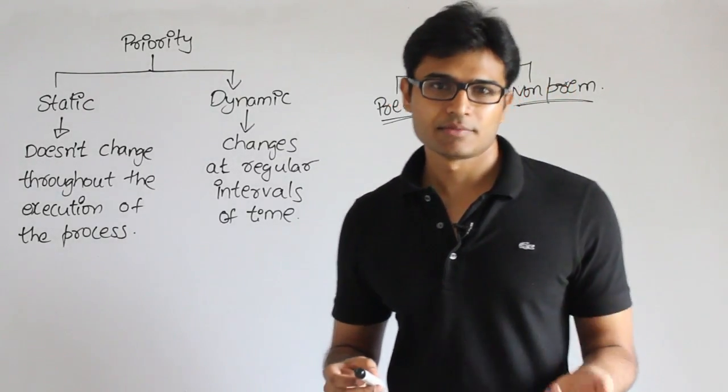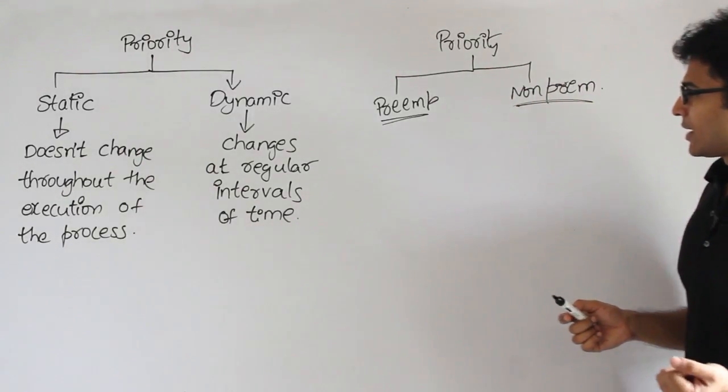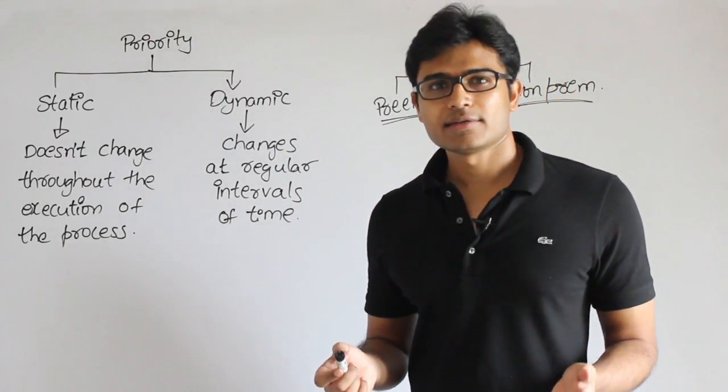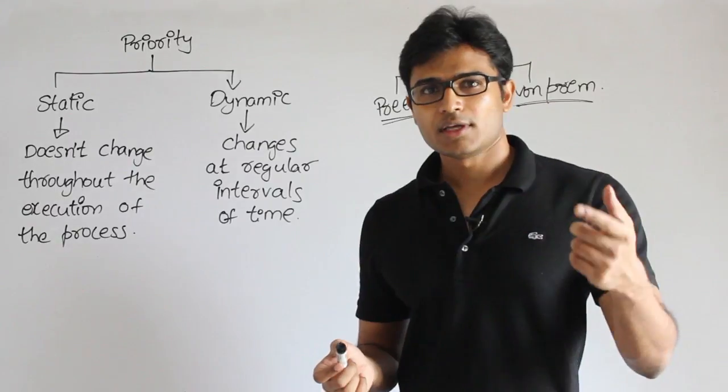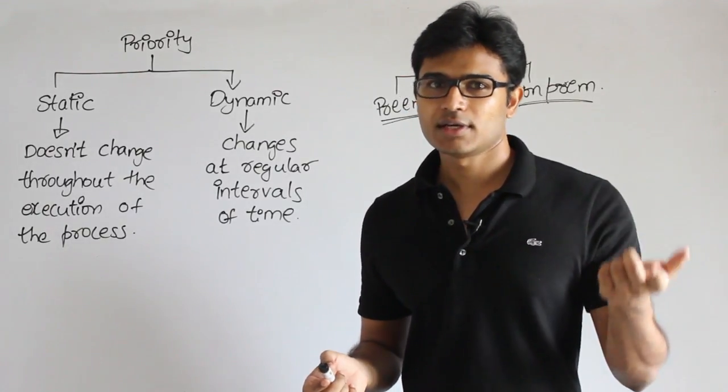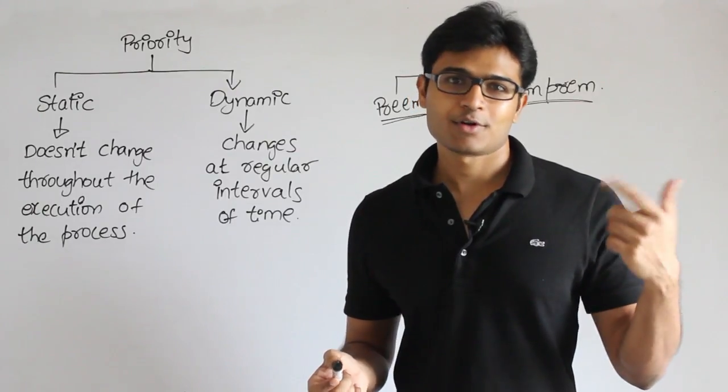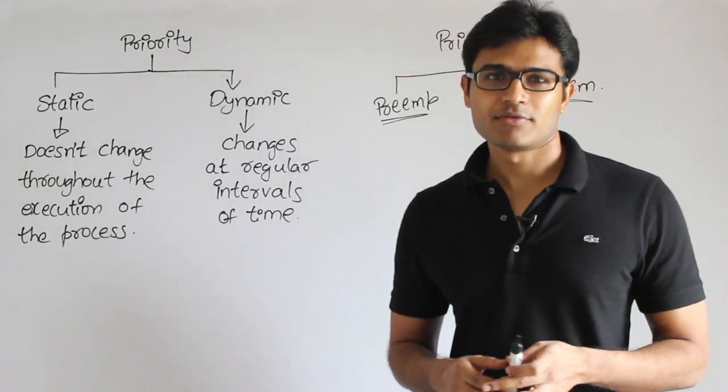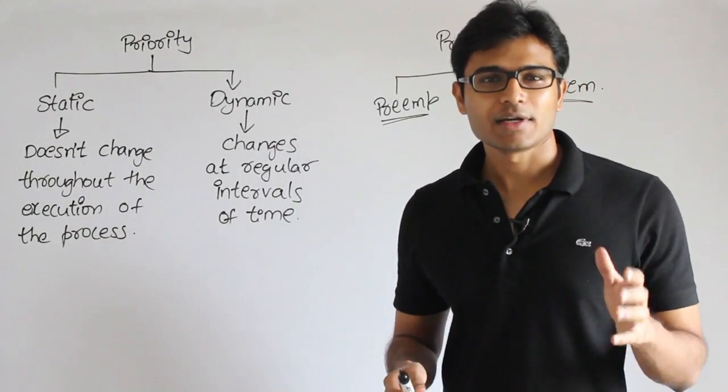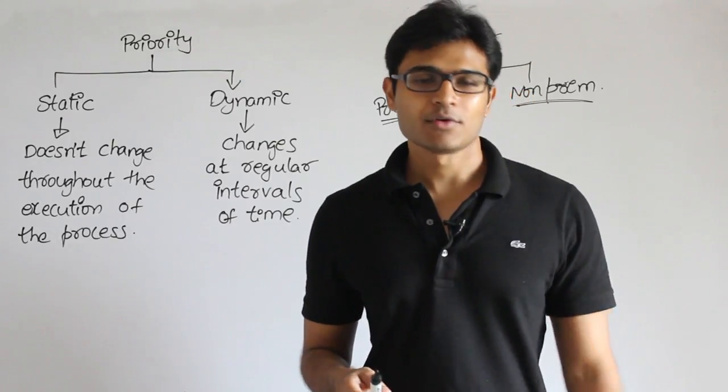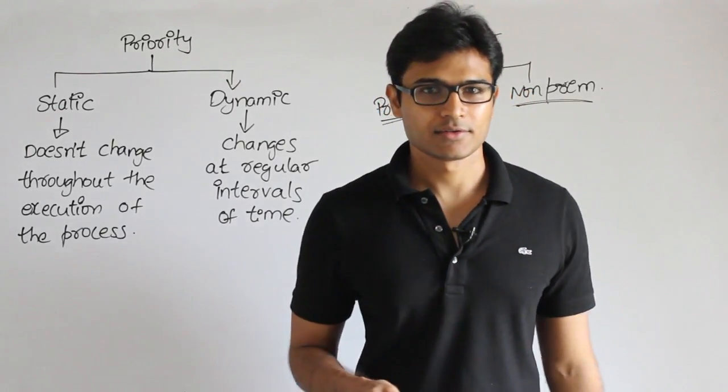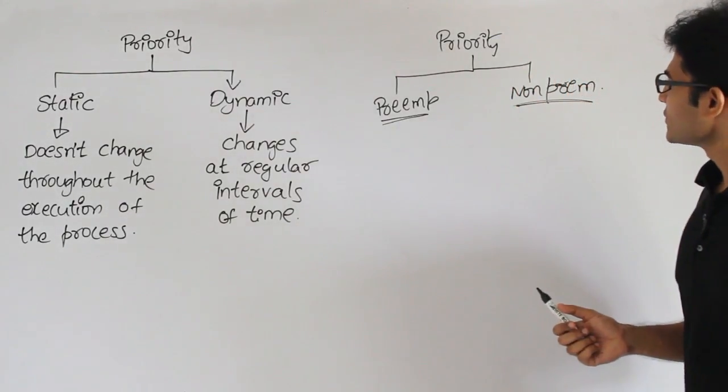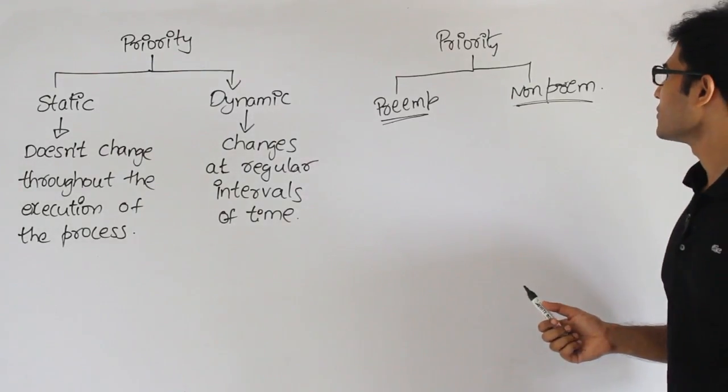And then sometimes what happens is two processes will have the same priority. In that case, arrival time is going to break the tie. If two processes are having the same priority, we take the one with the earlier arrival time. In case the arrival times are also same - it doesn't happen because the time at which they join the queue is going to be different - but in case if it happens, then again we are going to see the process ID: P1, P2, P3 like that. The lower process ID will take the higher precedence. So now let's see some examples on that. Using this I'll explain you how does this preemptive and non-preemptive work.